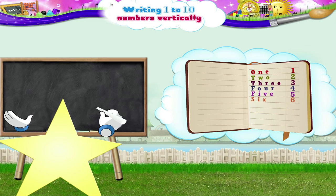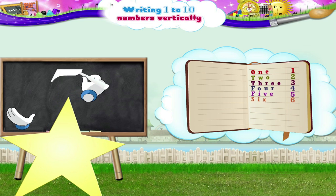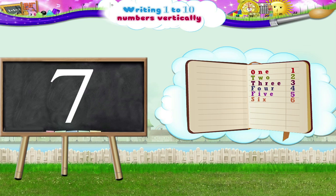Next, we have the number 7. A straight line to your right, stop, and a slanting line to the left. S-E-V-E-N, the number 7.